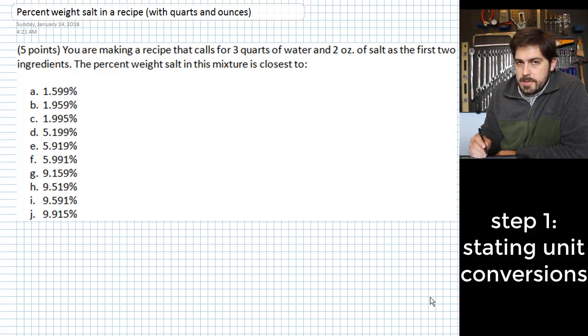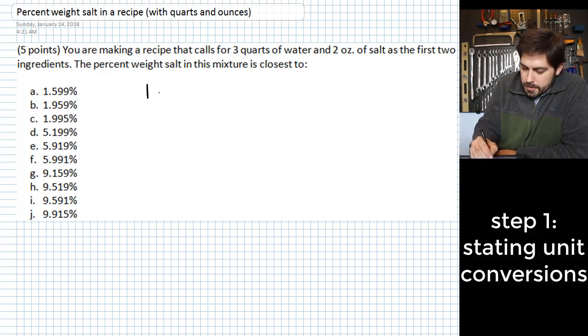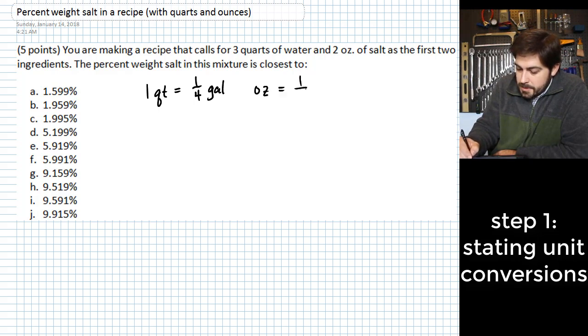A quart is a quarter of a gallon so I think I'll write that down here. One quart equals one quarter of a gallon. An ounce is 1/16th of a pound.